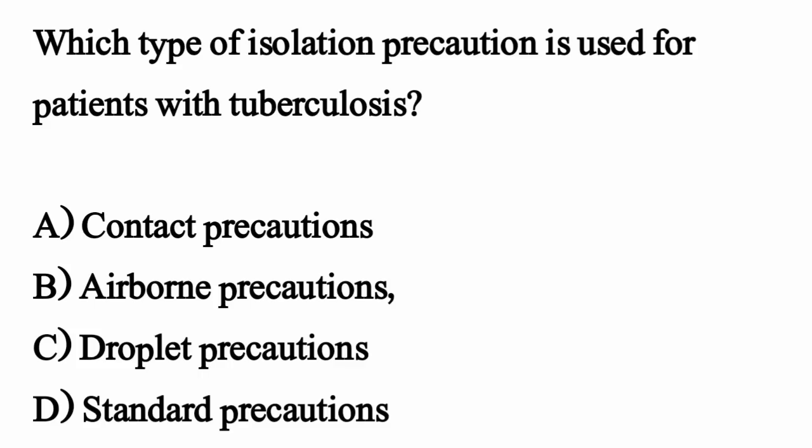Which type of isolation precaution is used for a patient with tuberculosis? The correct option is Option B, airborne precautions.